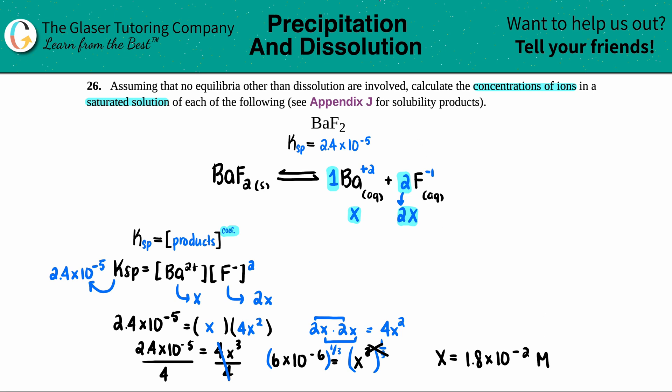Now they just wanted the concentration of the ions. So that's when we just go back to the equation and say, barium was just X and the fluorine, the fluoride ion was labeled as 2X. So for this one, barium would just be the X value, 1.8 times 10 to the negative second molarity.